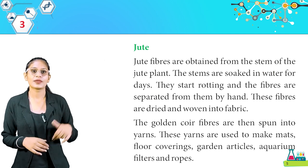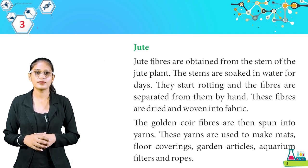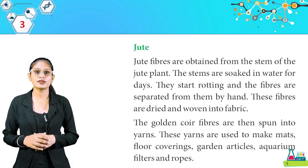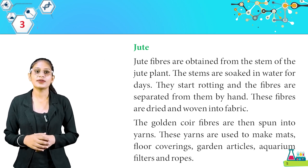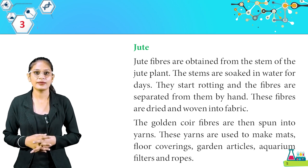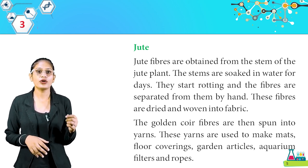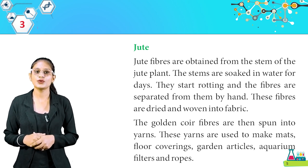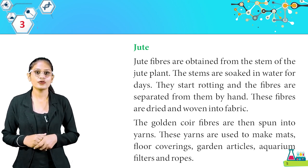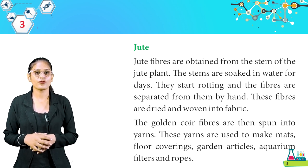Here is jute. Jute fibers are obtained from the stem of the jute plant. The stems are soaked in water for days. They start rotting and the fibers are separated from them by hand. These fibers are dried and woven into fabric. The golden jute fibers are then spun into yarns, which are used to make mats, floor coverings, garden articles, aquarium filters, and ropes.